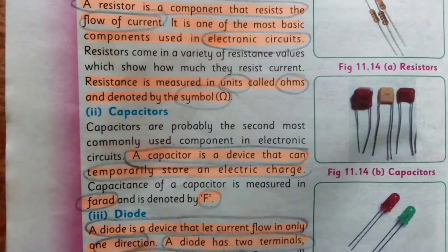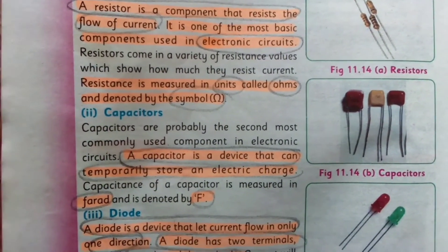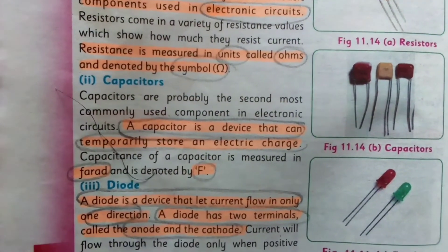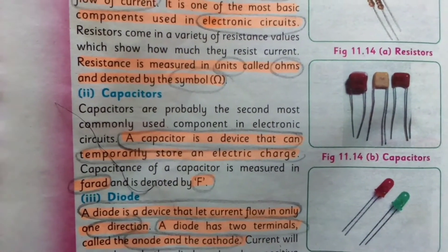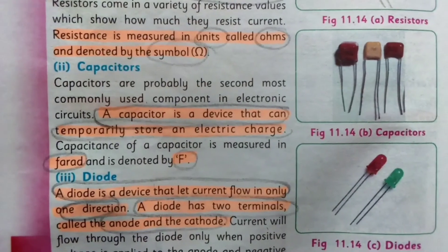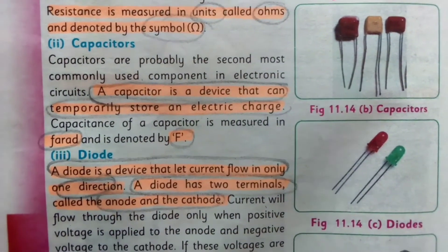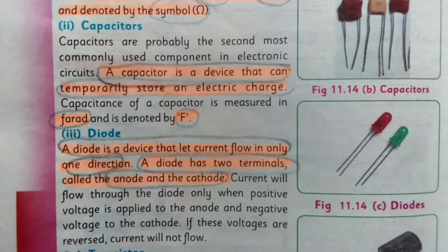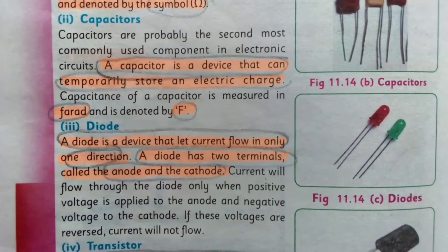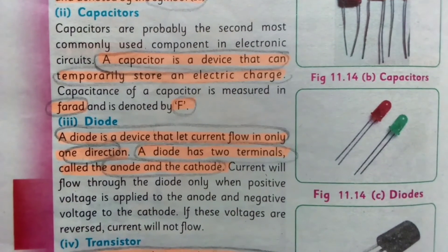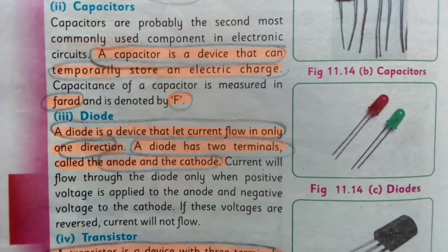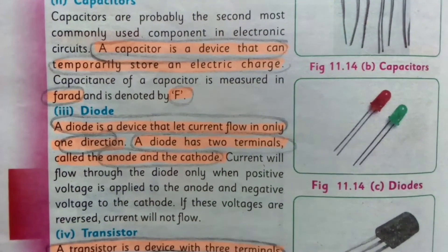A capacitor is a device that can temporarily store electric energy. It is measured in farads, represented by the symbol F.